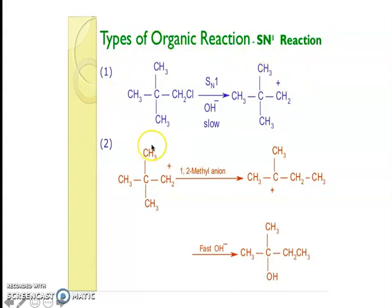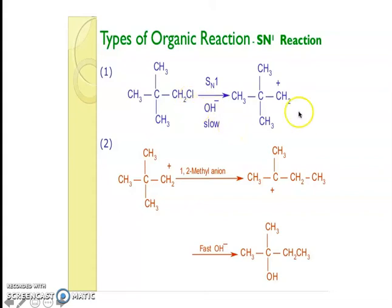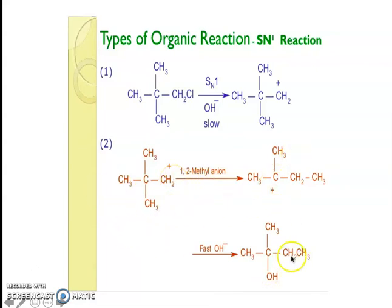For example, tertiary butyl chloride reacting with OH⁻ ions: in the first slow step, the chloride ion leaves the substrate giving rise to a carbocation — the OH⁻ plays no role here. In the second fast step, the nucleophile attacks either from the front side or the back side, giving rise to two different organic compounds.